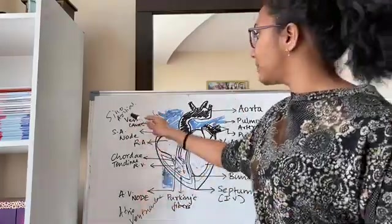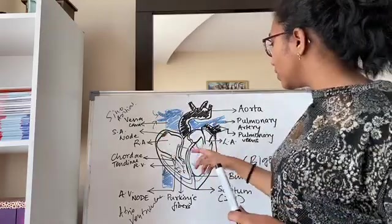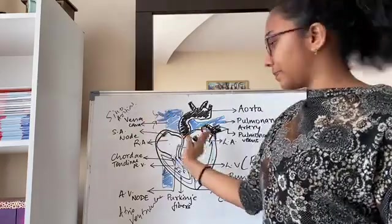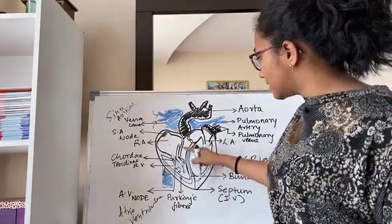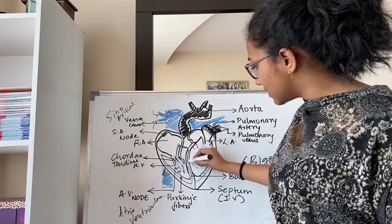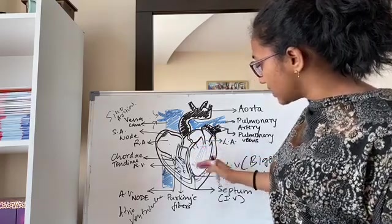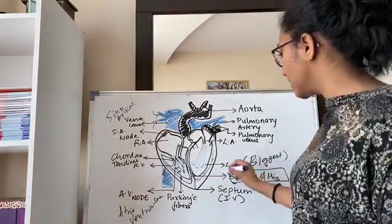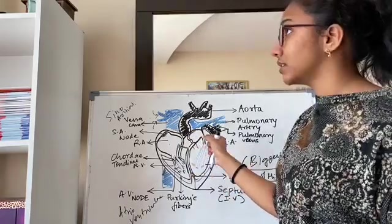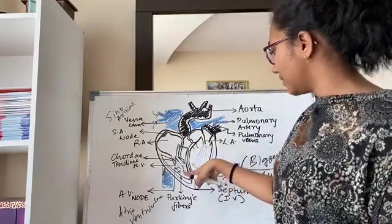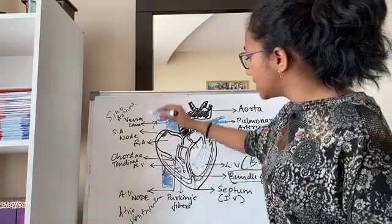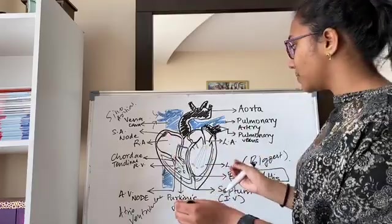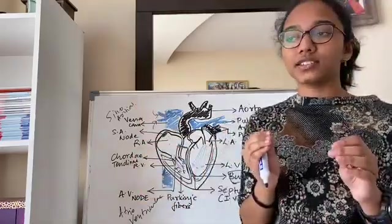The AV node continues as fibers. This thing which is dividing here is known as bundle of His. Bundle of His divides in the interventricular septum and it moves towards the entire ventricular musculature so that it can pass on the action potential to the entire musculature. Action potential is a command for the ventricles to contract.